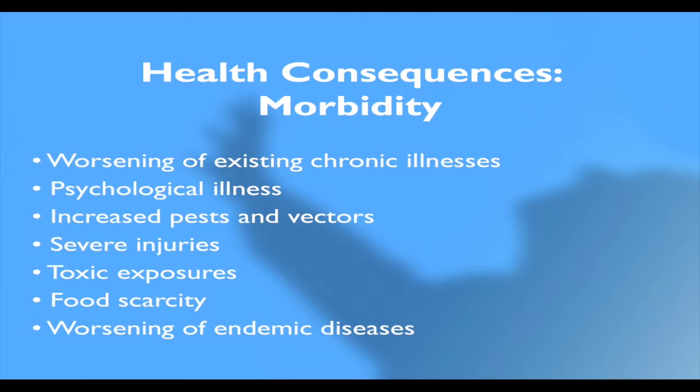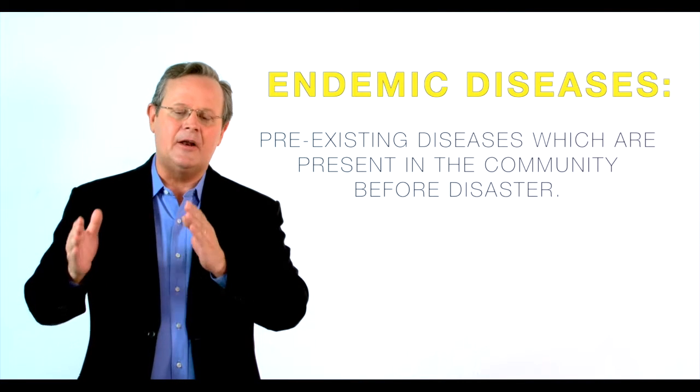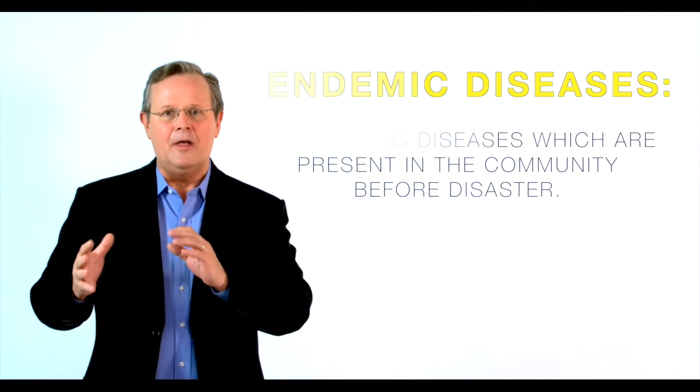Finally, there is the worsening of endemic diseases — those already present in the community before the disaster. A local influenza outbreak, for example, may worsen when a disaster strikes. The disaster doesn't introduce a new epidemic, but it worsens what's already there. In the Western world, our endemic diseases include chronic conditions like heart attacks and strokes, and those worsen after disasters.